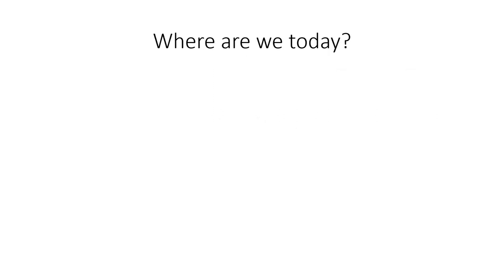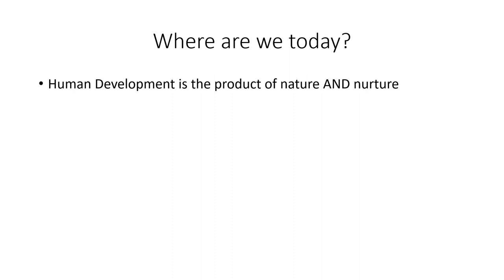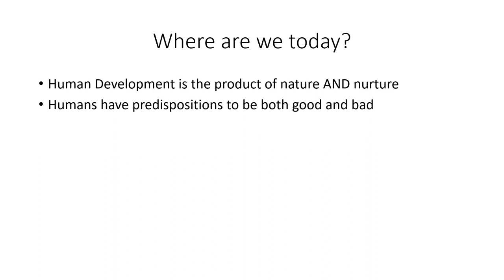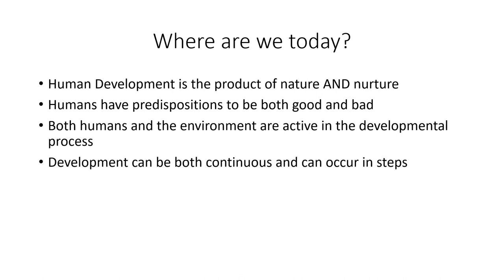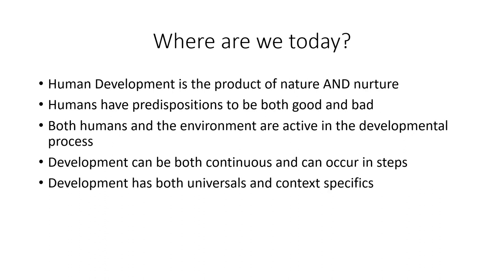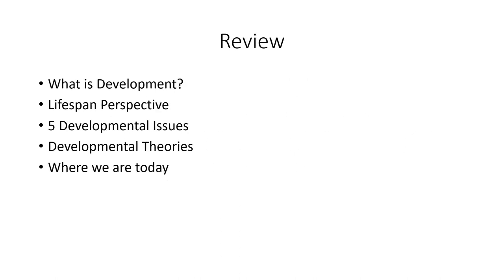Let's finally look at where we are today. Going back to those developmental issues: we know that human development is a product of nature and nurture. We know that humans have predispositions to be both good and bad. We know that both humans and the environment are active in development. We know that development can be both continuous and discontinuous. And we know that development has both universals and context specificities. In conclusion, we looked at what is development, the lifespan perspective, the five developmental issues, the developmental theories, and where we are today. Hopefully the recording worked this time. Thanks.